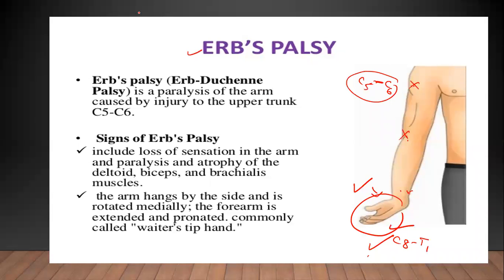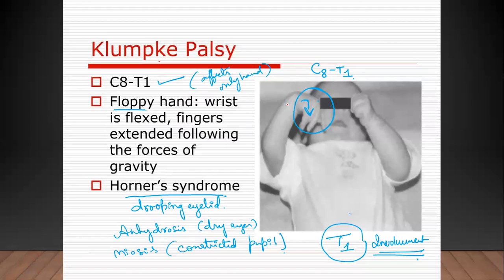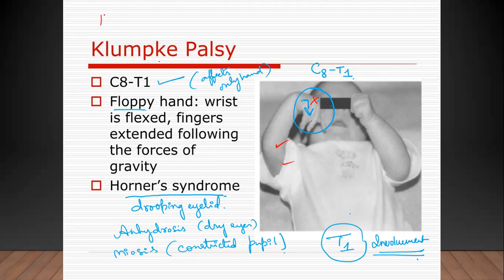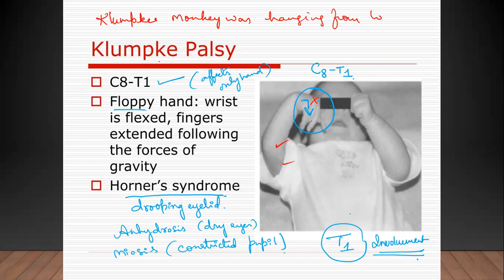The next condition is Klumpke's palsy — the opposite of Erb's. Only the hand does not move (C8/T1 affected), while the rest of the arm moves. You can remember it as: a 'clumsy monkey hanging from the lower trunk of a tree.' The lower trunk is derived from C8/T1. Remember there is also a sympathetic chain derived from T1.